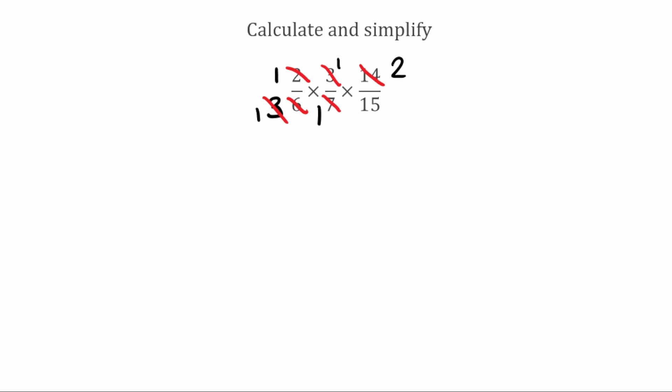Now on the top we've got 1, 1, and 2. On the bottom we've got 1, 1, and 15. There are no highest common factors greater than 1, so we can't simplify any further. Multiplying through on the top: 1 multiplied by 1 multiplied by 2 gives 2. On the bottom: 1 multiplied by 1 multiplied by 15 gives 15. So our final answer, fully simplified, is 2 over 15.